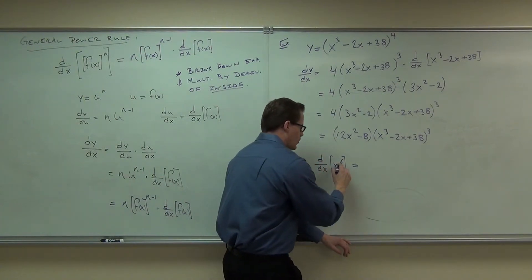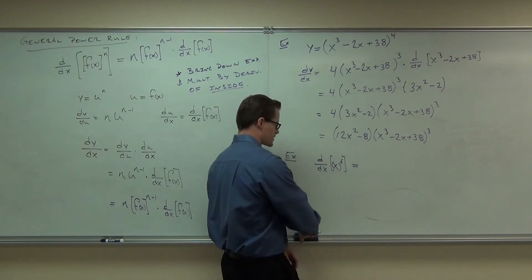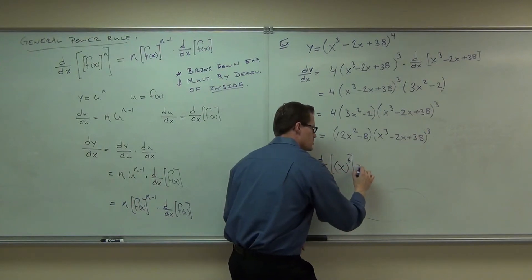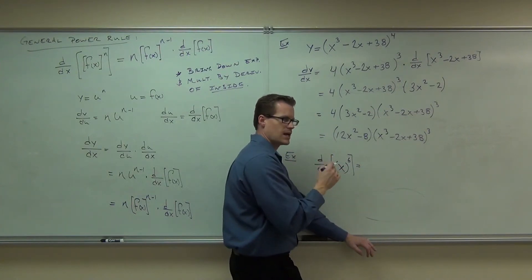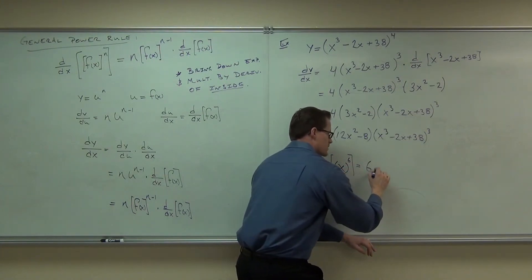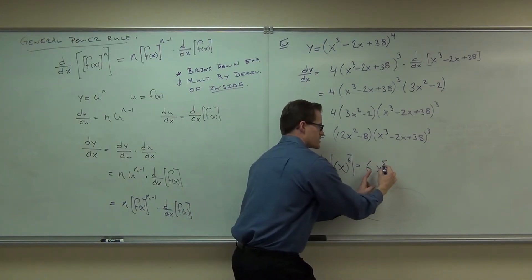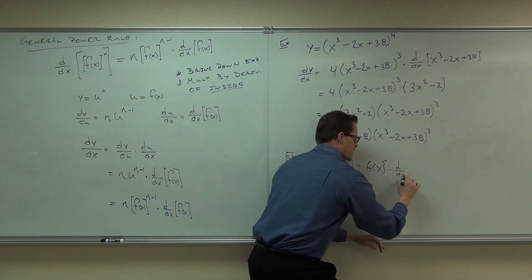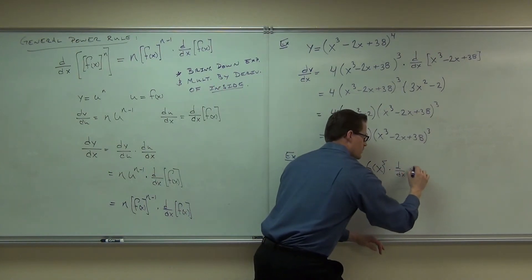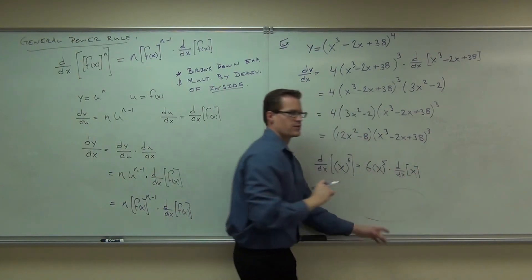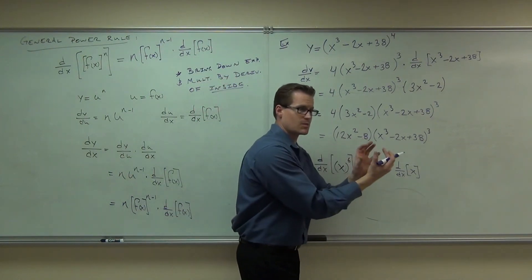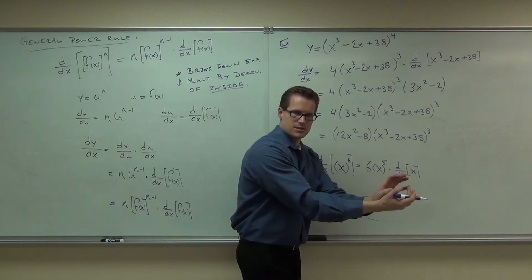But if you applied the general power rule to this, check it out. If you said, oh, well, that's a function in terms of x. I'll write it a little better so you can really see it. If I said, that's a function in terms of x. Could you do the general power rule to it? And the answer is, yeah, you could. Check it out. You would do the sixth times x to the fifth. Remember, that would be in parentheses, right? Because that's your function. Times the derivative of whatever's inside. Only this time the inside is x. What's the derivative of x?